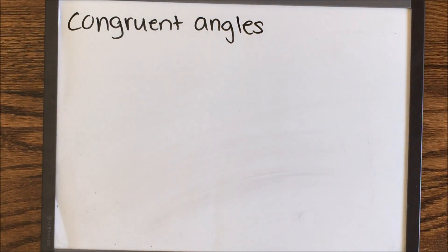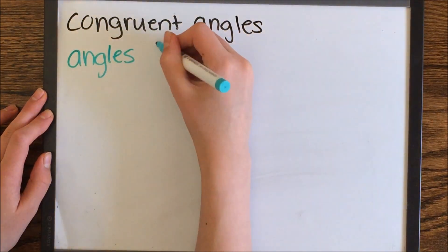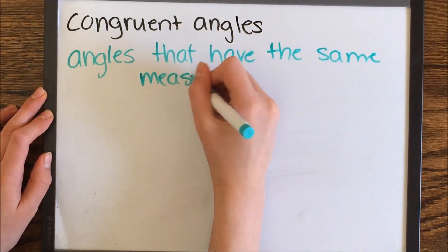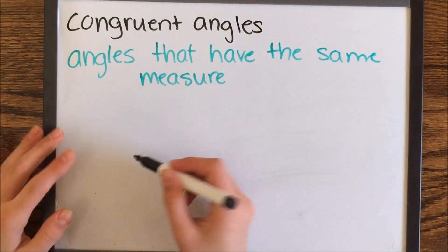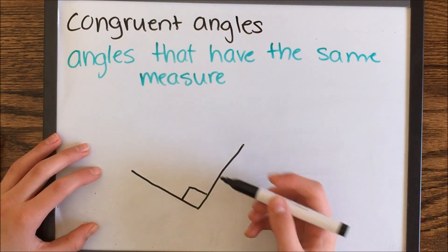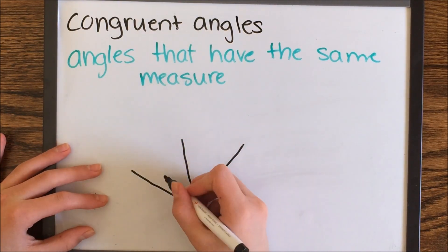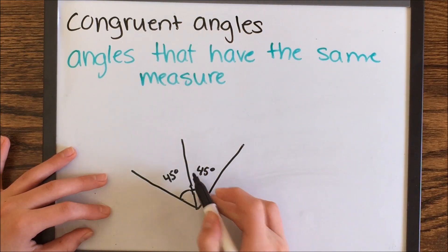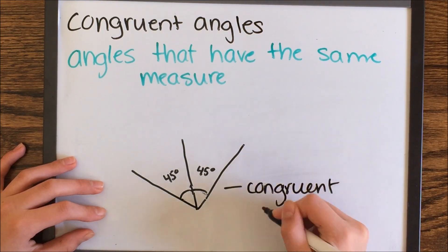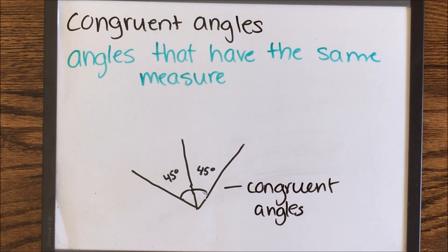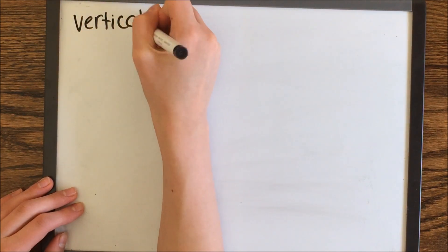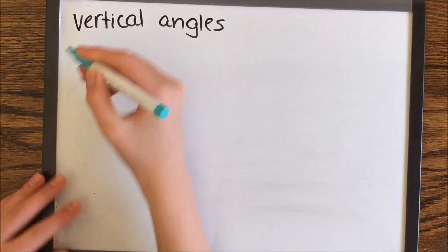Congruent angles are angles that have the same measure. Usually it's two angles. Here we have an angle that is a right angle, and there are two angles that are 45 degrees. They are congruent angles because they have the same measure. They both have a measure of 45 degrees.